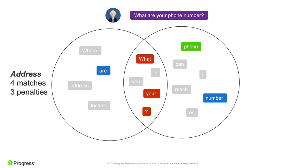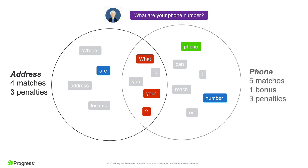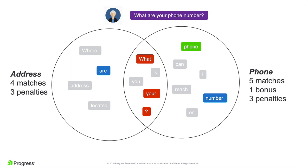The phone Q&A has five matches — 'what', 'your', question mark, 'phone', and 'number' — of which we have three penalized matches, one bonus match for the highlighted strong token, and one regular match for 'number'. Obviously, the phone Q&A is the one that is going to win this battle.